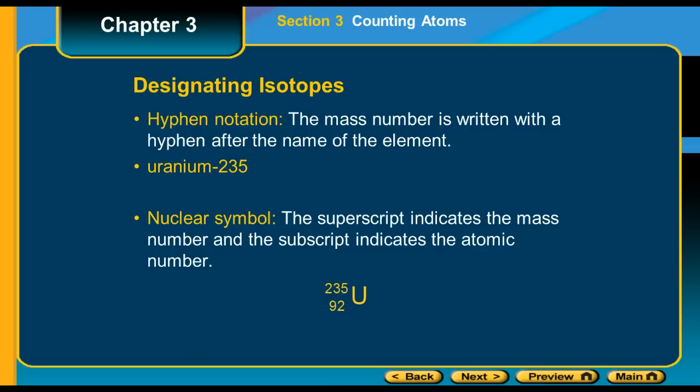So a couple of ways that you can indicate that you are dealing with an isotope: you can have hyphen notation or you can have the nuclear symbol. Hyphen notation is when the mass number is written with a hyphen after the name of the element. So in this case, you have uranium-235. That's telling me that my atom that I'm dealing with is one of the isotopes. It has a mass of 235.